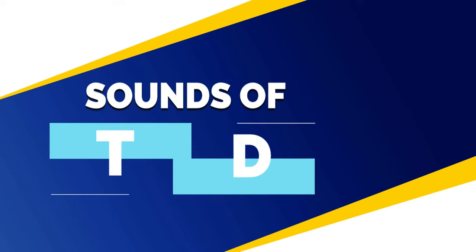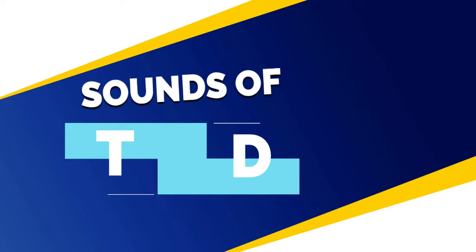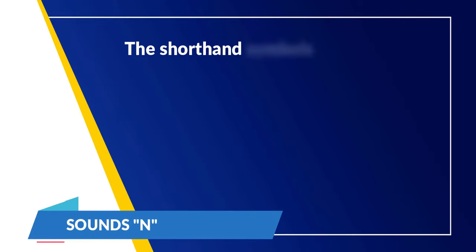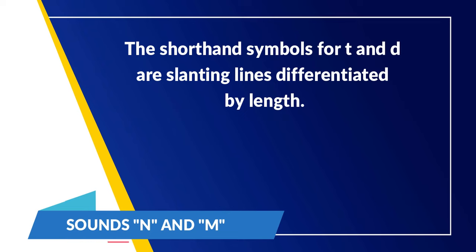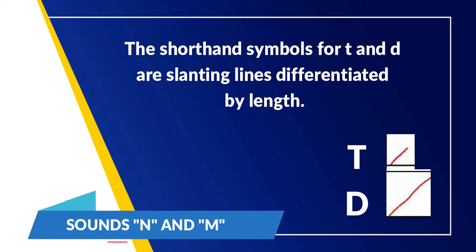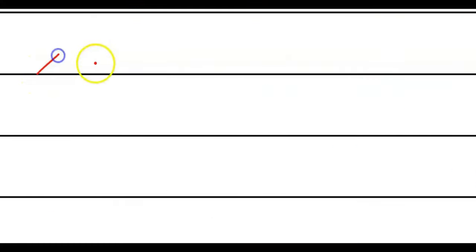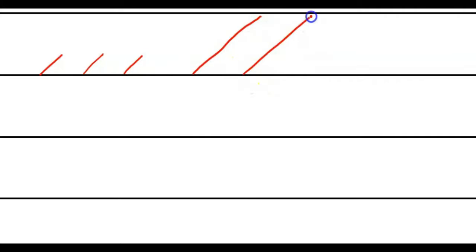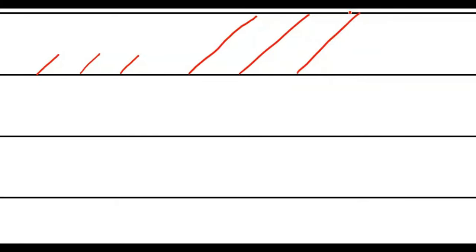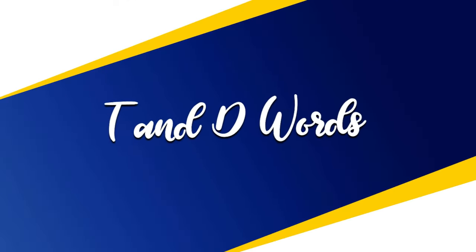Next, we have the sounds of T and D. The shorthand symbols for T and D are upward slanting straight lines differentiated by length. The T is a short slanting straight line, and the D is a long slanting straight line. Please note that in writing the outline for T and D, you need to observe proper proportion and alignment — normally T is half the size of D.